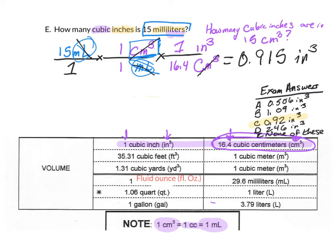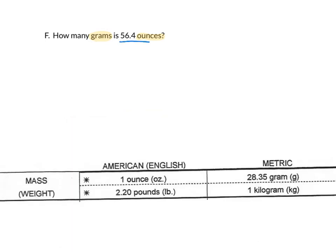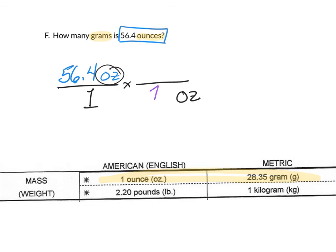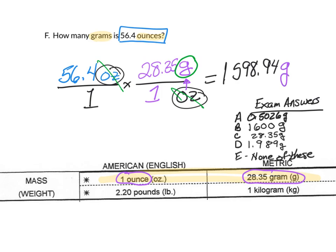One more: letter F — how many grams is 56.4 ounces? Grams and ounces are both mass or weight units, so we use the mass section of the chart. We start with 56.4 ounces over 1, put 1 ounce on the bottom, and 28.35 grams on top. So: 56.4 ounces over 1 times 28.35 grams over 1 ounce gives us 1,598.913 grams. Don't worry about the decimal places — those are a few examples of how to do American-to-metric conversions.